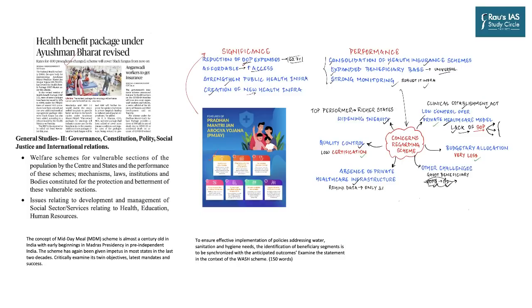The next topic: Health Benefits Package under Ayushman Bharat Revised. The National Health Authority, the apex body for implementing Ayushman Bharat Pradhan Mantri Jan Arogya Yojana, has revised the health benefit package master under the scheme. In the revised version — Health Benefit Package 2.2 — rates of some packages have been increased by 20% to almost 400%, enabling impaneled hospitals to provide better services to beneficiaries.